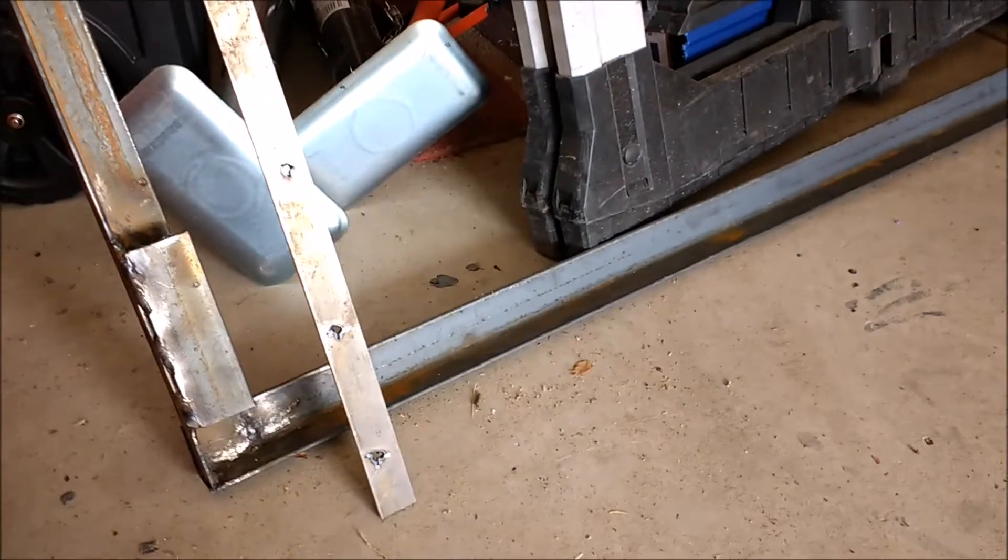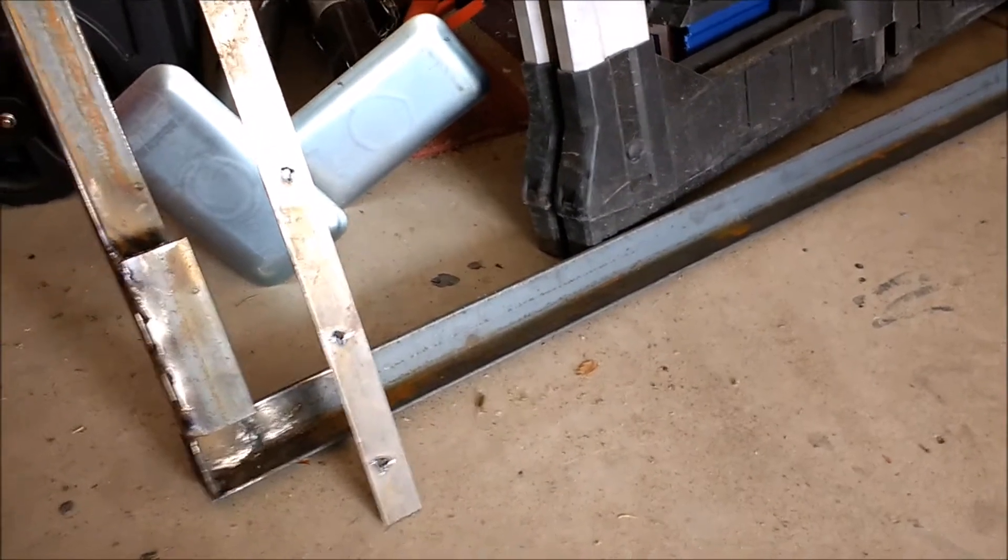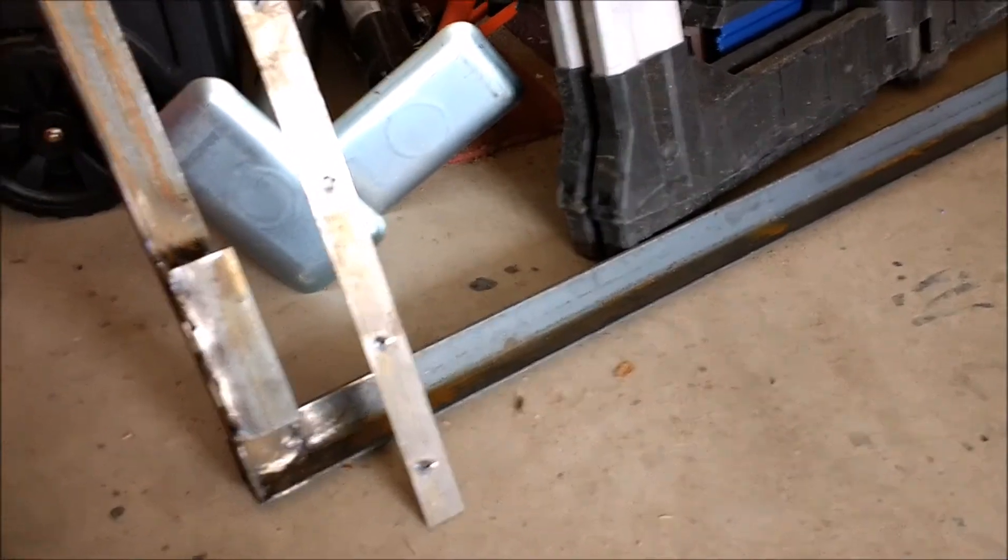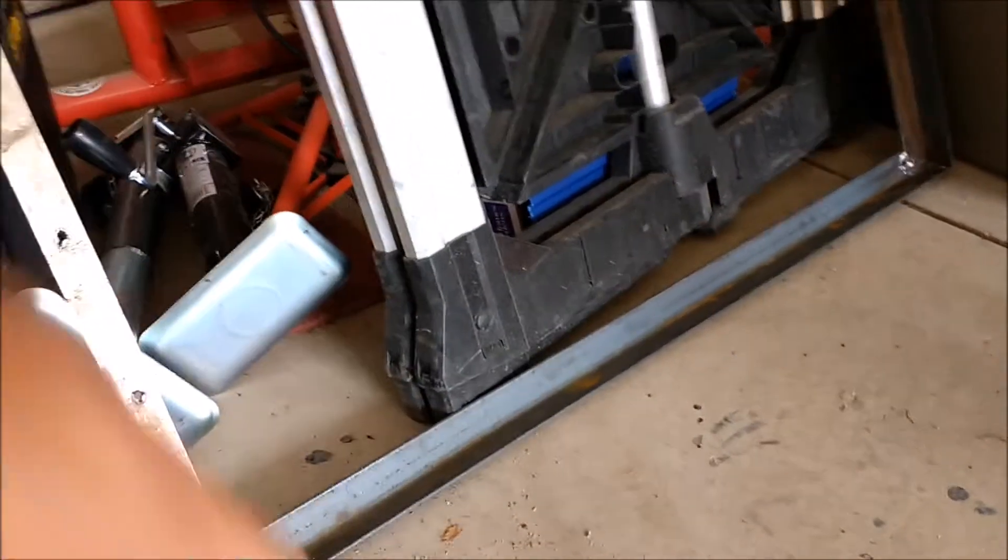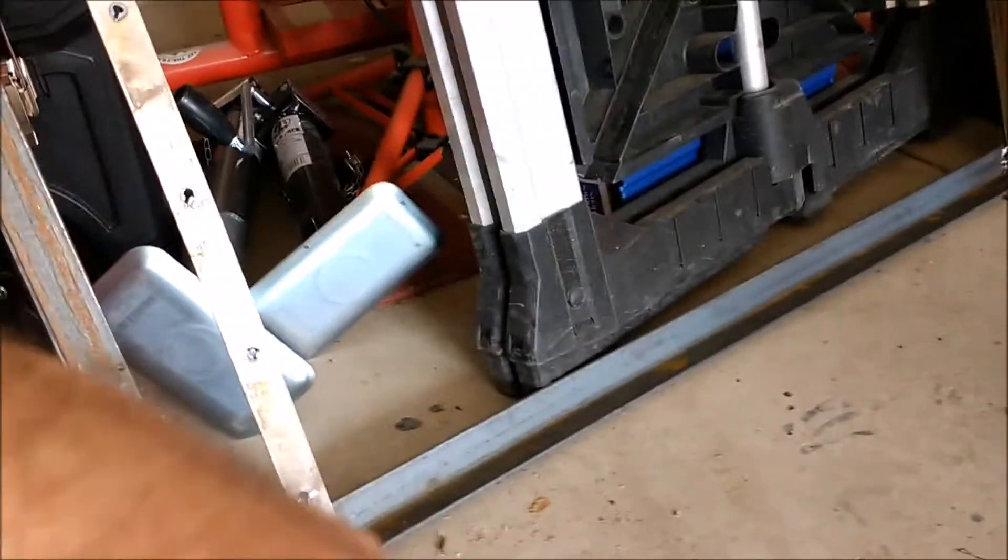So that'll be the bottom. And then if the boards ever rot in five or ten years or whatever, and I want to change them out, I'll just cut that weld right there, grind it and grind the little tiny weld in the middle and pop it out and replace, pull the boards out and replace them and re-tack it back in and be done.